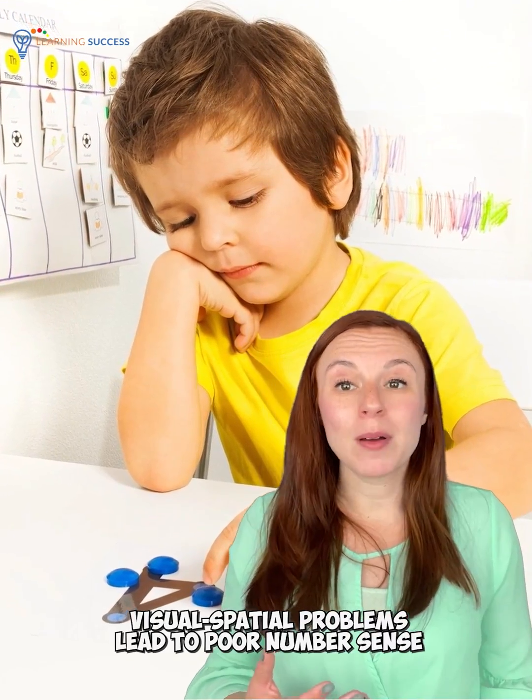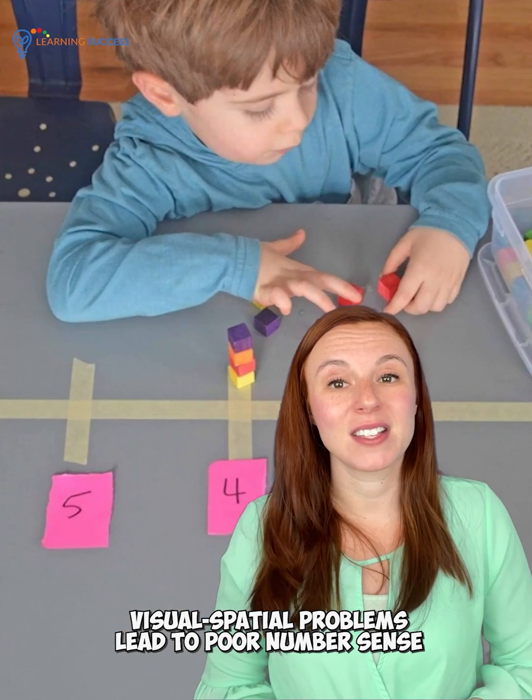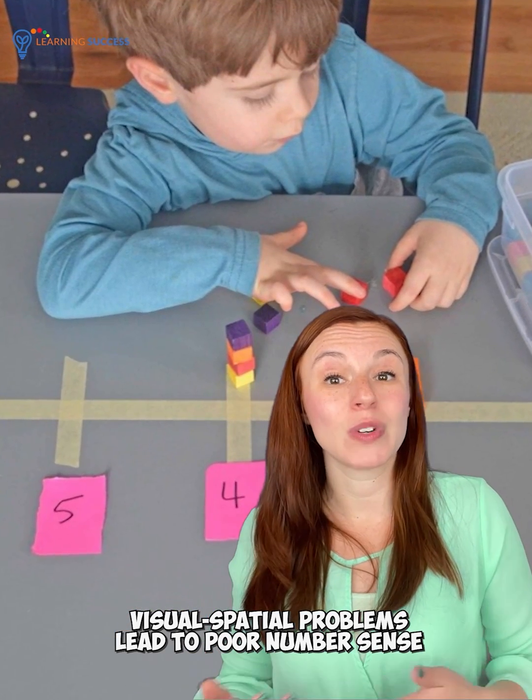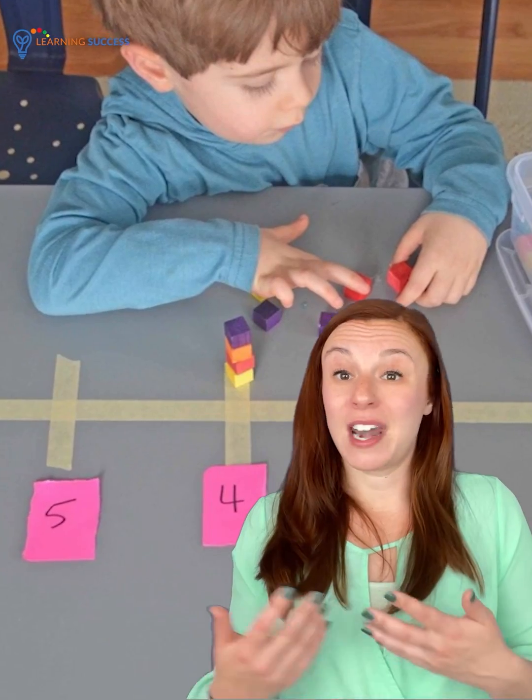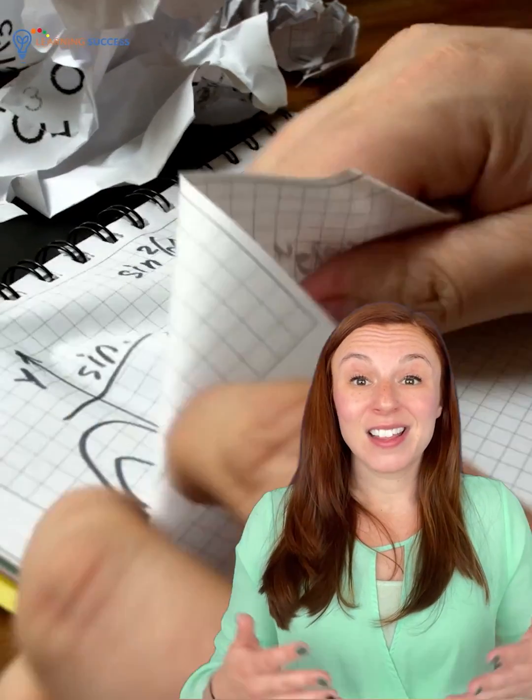So if there is a visual-spatial problem, then it should be pretty obvious that this will also lead to difficulty with the relationships between numbers. And if there's a difficulty with that, then math will become extremely difficult.